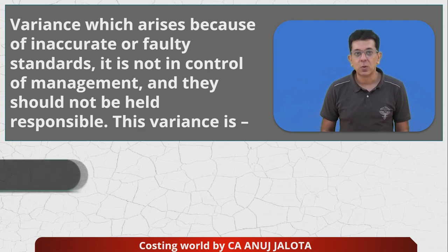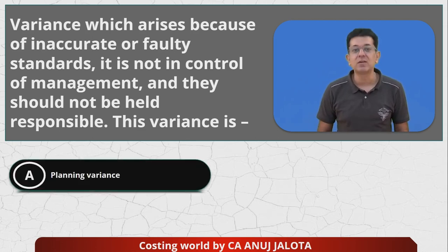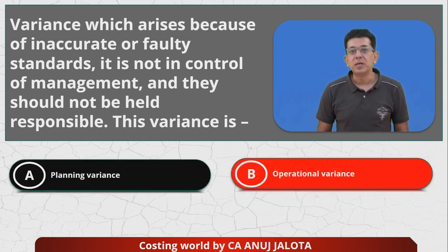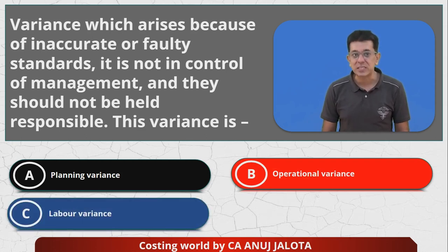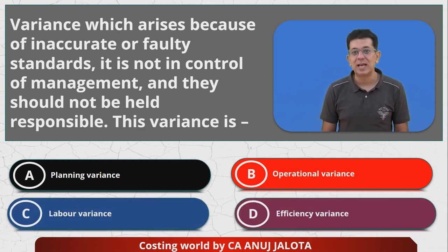Now the four options: Planning variance, B is operational variance, C is labor variance and D is efficiency variance. Let's try to look at the correct answer.